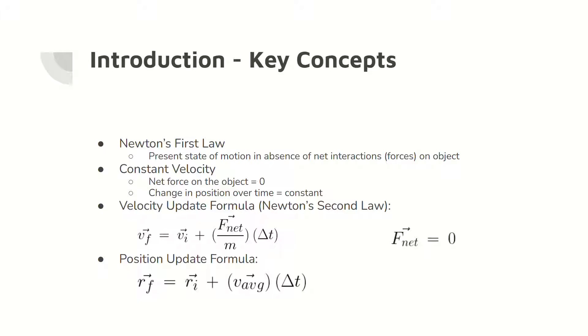The second formula is the position update formula, which updates the position of an object based on the object's average velocity and the change in time. Because the velocity is constant, the average velocity will equal the initial velocity.